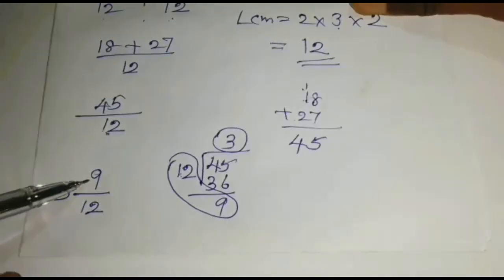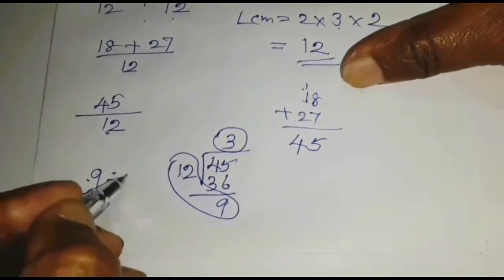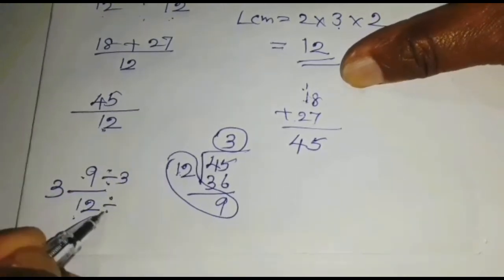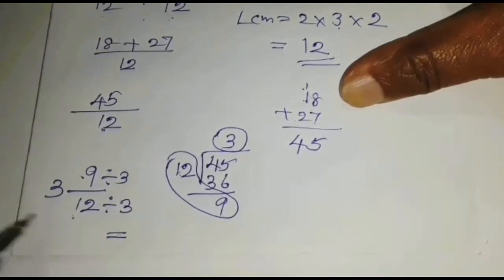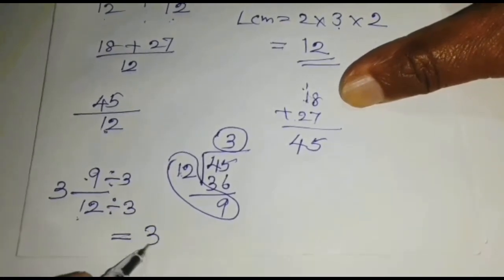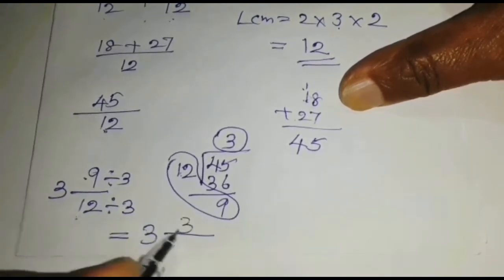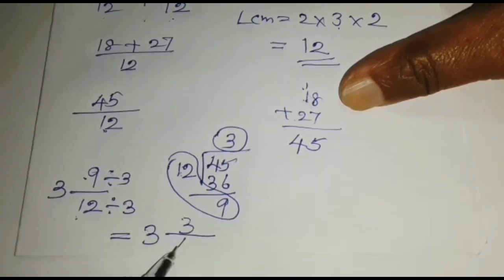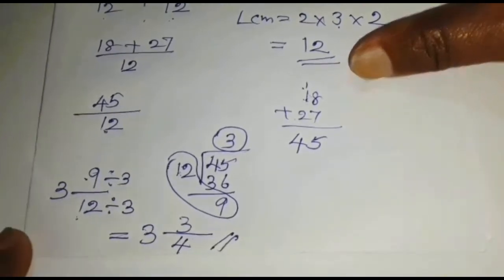In this fraction, 9 and 12 are divisible by 3. Then we can divide by 3. Divide by 3. Whole number is 3. 9 divided by 3 is 3. 12 divided by 3 is 4. Answer is 3 3/4.